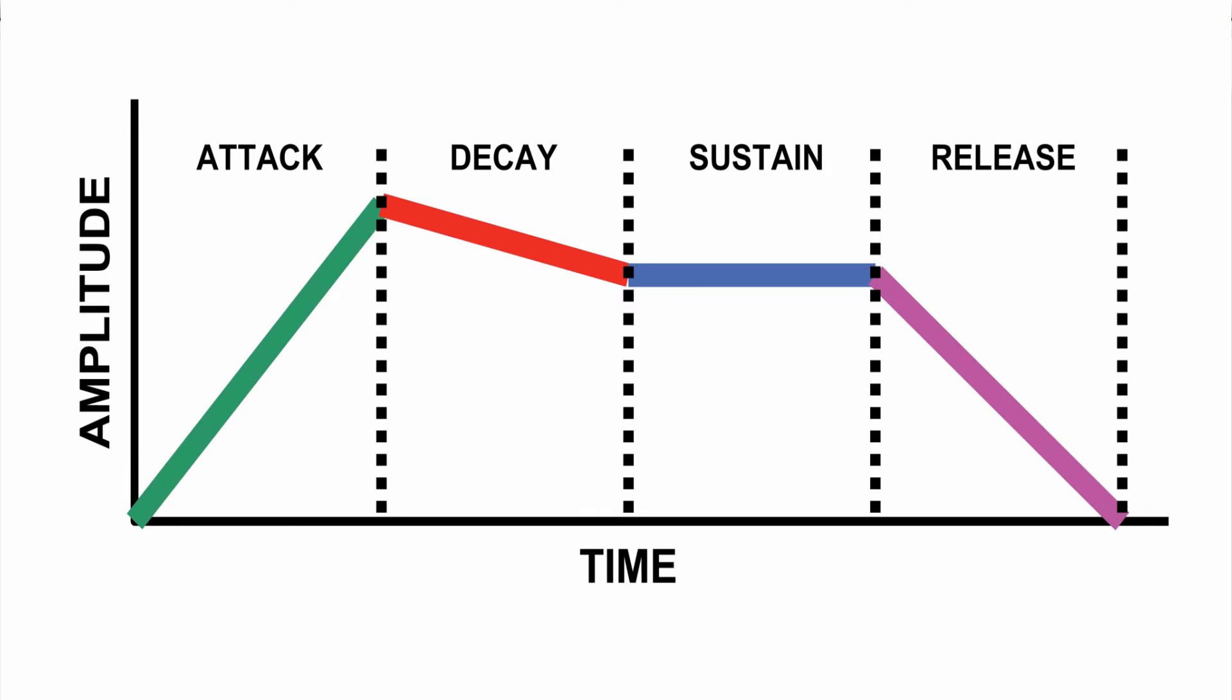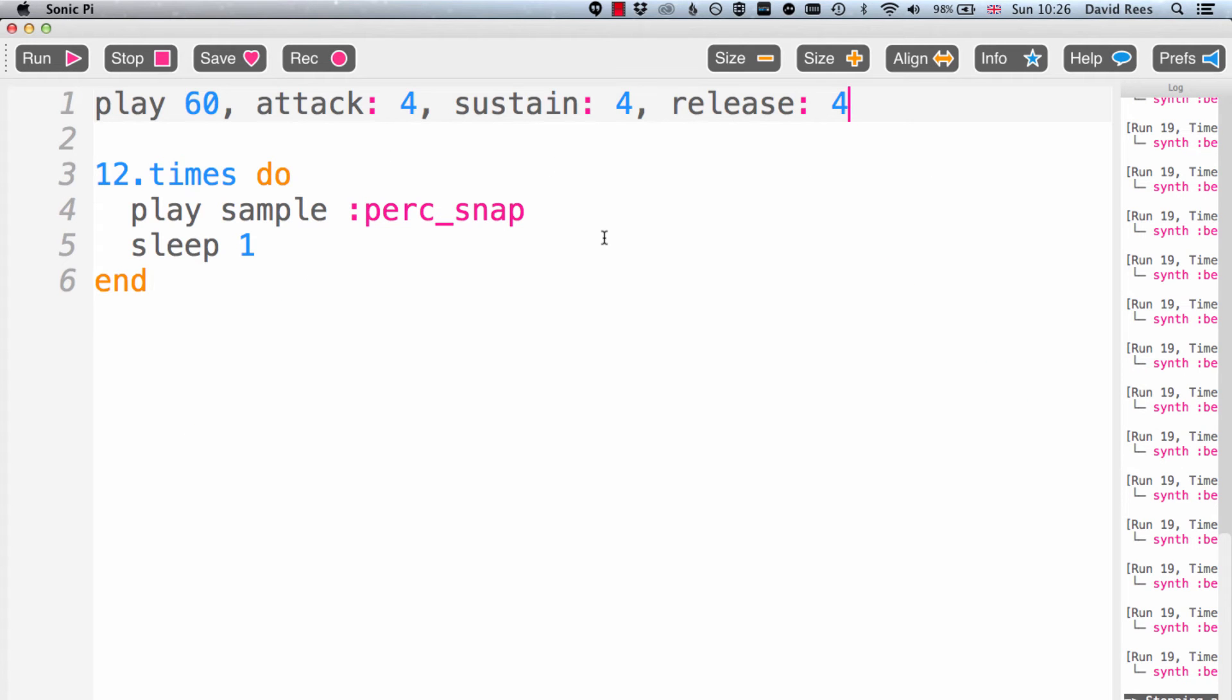And all of those have a default. And the default attack level and sustain level is the same. They're both 1. So the sound, if you don't change anything, will just be at 1. It'll have an amplitude of 1 all the way through the note.